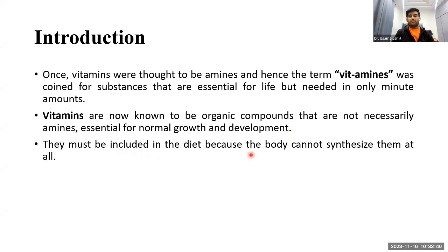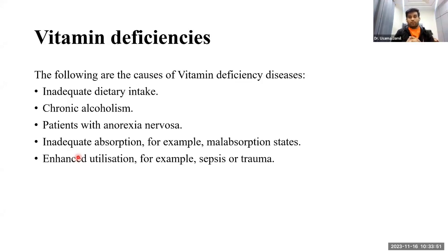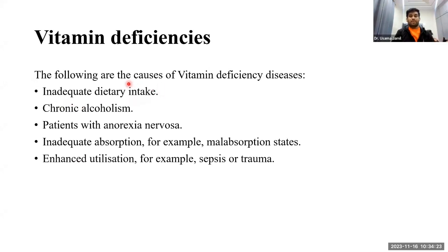Most vitamins must be included in the diet because the body cannot synthesize them. We will go through vitamin deficiency-related diseases and diseases related to vitamin overdose toxicity. Vitamin deficiencies can be caused by inadequate dietary intake — for example, eating too much fast food, skipping meals, or not taking a balanced diet. Chronic alcoholism can also cause vitamin deficiencies.